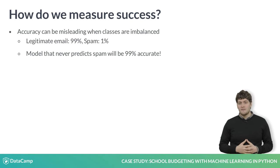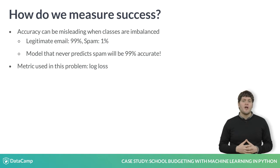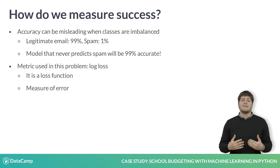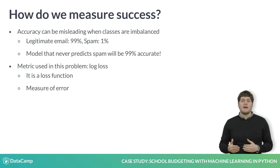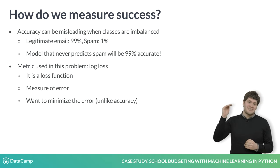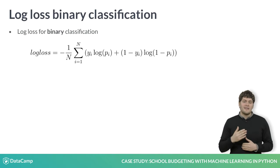The metric we use for this problem is called log loss. Log loss is what is generally called a loss function, and it is a measure of error. We want our error to be as small as possible, which is the opposite of a metric like accuracy, where we want to maximize the value.